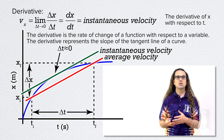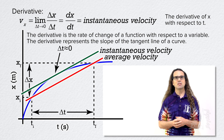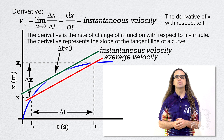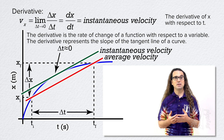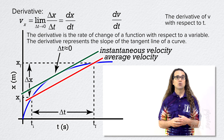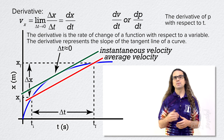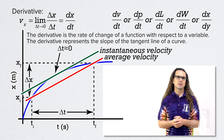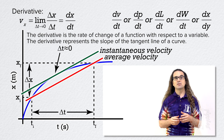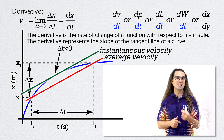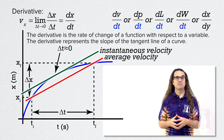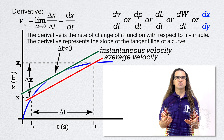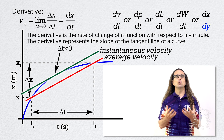We just pointed out that the slope of a position versus time graph is instantaneous velocity. Therefore, the derivative of position with respect to time equals instantaneous velocity. Please realize a derivative could also be the derivative of velocity with respect to time, or the derivative of linear momentum with respect to time — there are a lot of options we will get into eventually. Usually we are interested in the derivative with respect to time, however that is not always the case. We could have the derivative of x position with respect to y position, for example, so just be careful to pay attention to what variable the derivative is being taken with respect to.